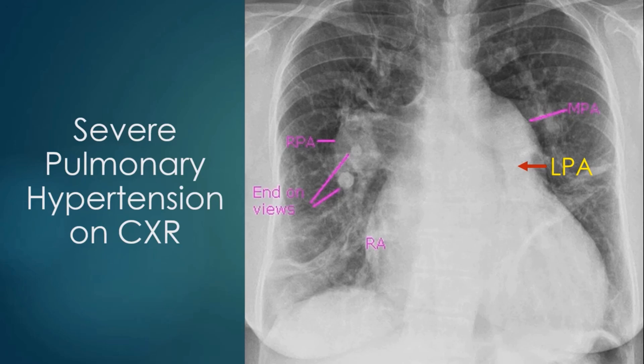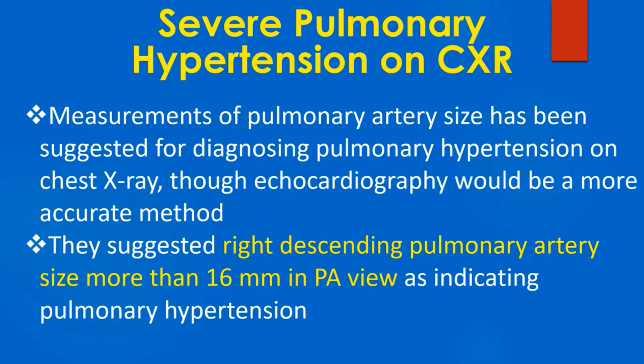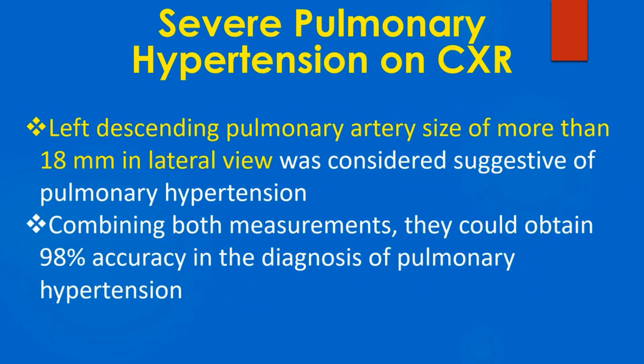Recurrent respiratory infections are more common in post-tricuspid shunts, more so in infancy, and could be a sequelae of previous recurrent respiratory infections common in persons with large left-to-right shunts. Measurements of pulmonary artery size have been suggested for diagnosing pulmonary hypertension on chest X-ray, though echocardiography would be a more accurate method. A right descending pulmonary artery size of more than 16 mm on PA view, and left descending pulmonary artery size of more than 18 mm on lateral view, are considered suggestive. Combining both measurements yields 98% accuracy in diagnosis.